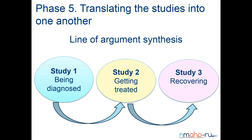In line of argument synthesis, you create a line of argument or finding that translates and transforms across studies — for example, getting diagnosed, getting treated, and so on — creating a coherent story that translates across the studies, and then presenting it.